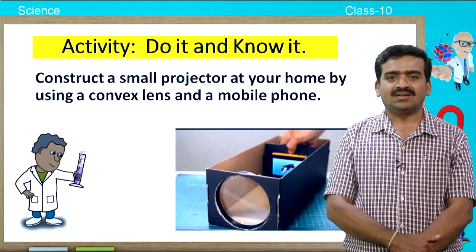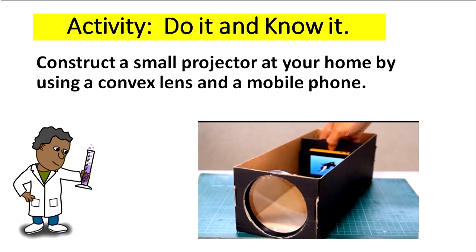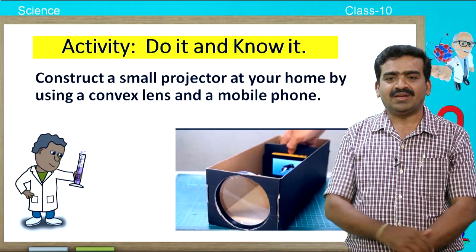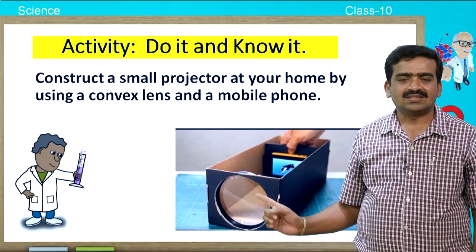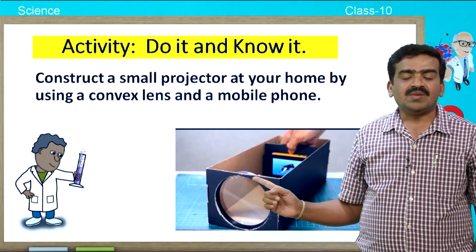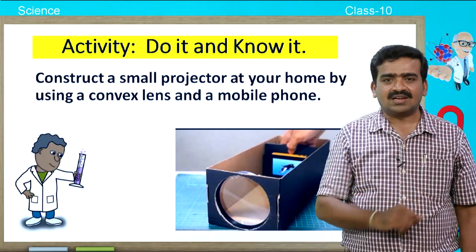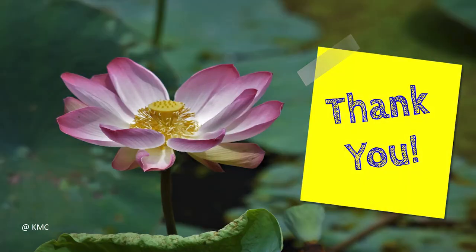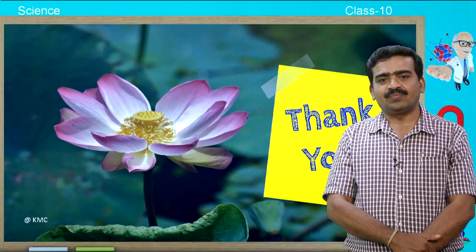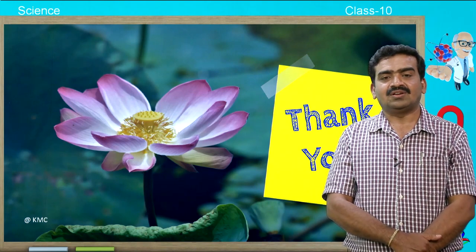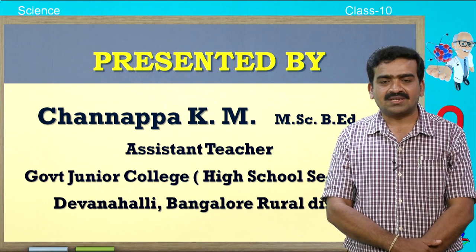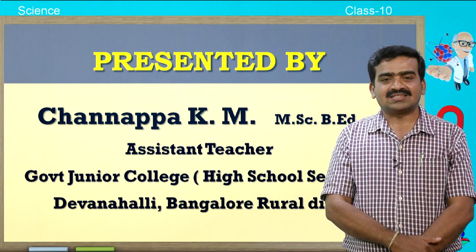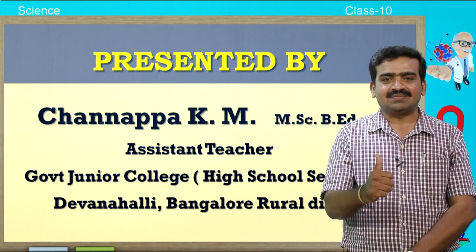Here you have an activity: construct a small projector at your home using a convex lens and a mobile phone. Place the mobile behind the convex lens and the image will be projected on the wall — try it yourself. My dear students, I hope you enjoyed the session and understood the learning concepts of today. Thanks for your active participation in the class. Let us meet in the next session. Till then, have a nice time. Thank you.